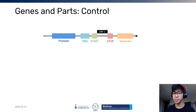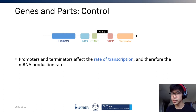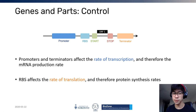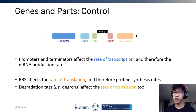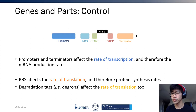Now let's talk about how to control parts to behave differently. To change the rate of transcription, you modify promoters and terminators. To affect the rate of translation and change protein expression levels, you modify the RBS. To decrease the lifespan of a protein — say it's toxic to the cell — you can use degradation tags, which also effectively reduce the rate of protein accumulation.